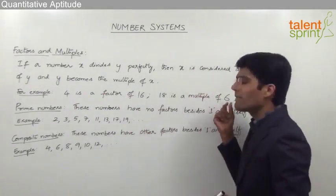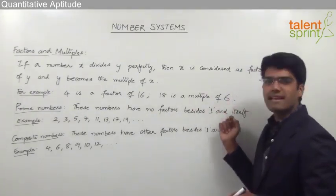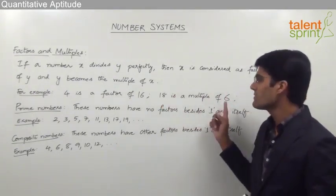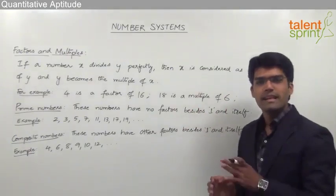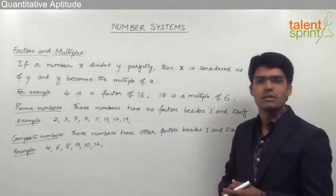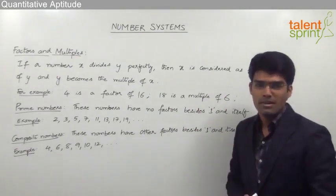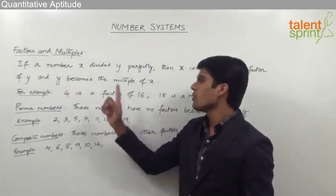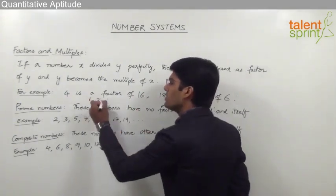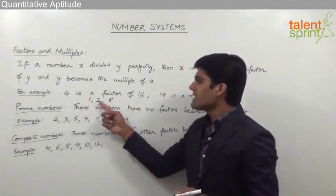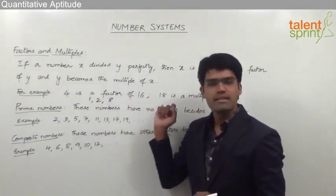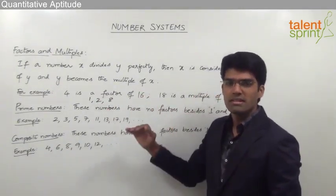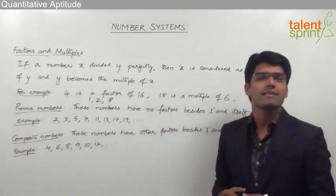Similarly, 18 is a multiple of 6 because 18 is divisible by 6 exactly, meaning 6 is a factor of 18. Factors and multiples are linked to each other — if a is a factor of b, then b has to be a multiple of a. So if 4 is a factor of 16, then 16 is a multiple of 4. Apart from 4, the other factors of 16 are 1, 2 and 8, because 16 is exactly divisible by all three: 16÷1=16, 16÷2=8, and 16÷8=2.